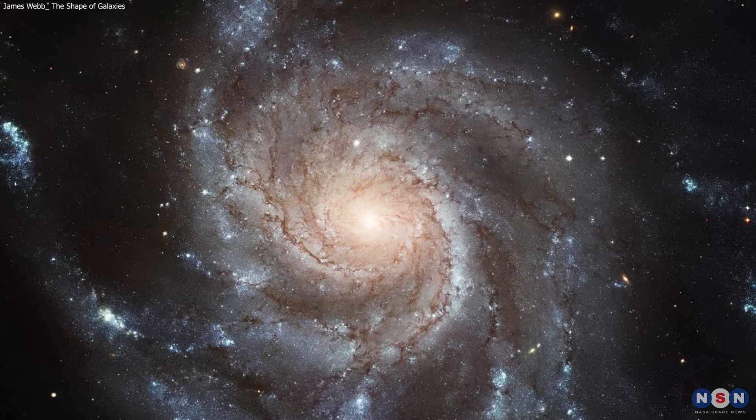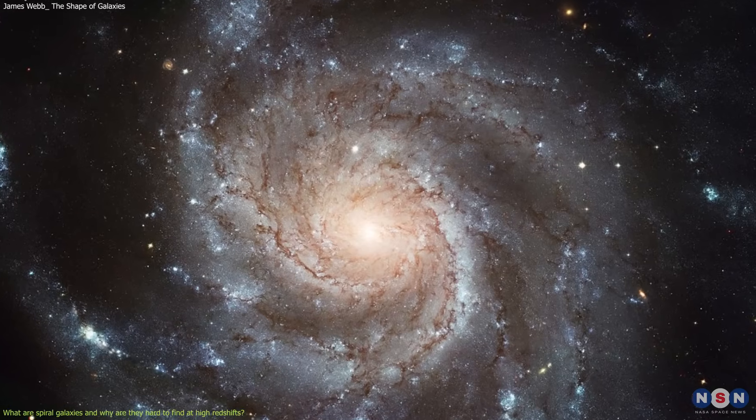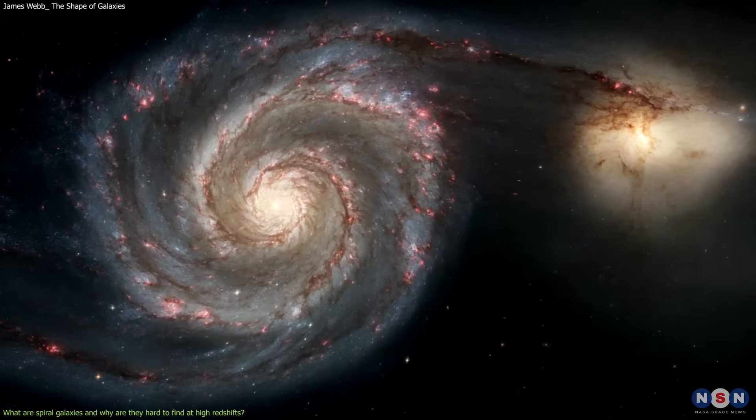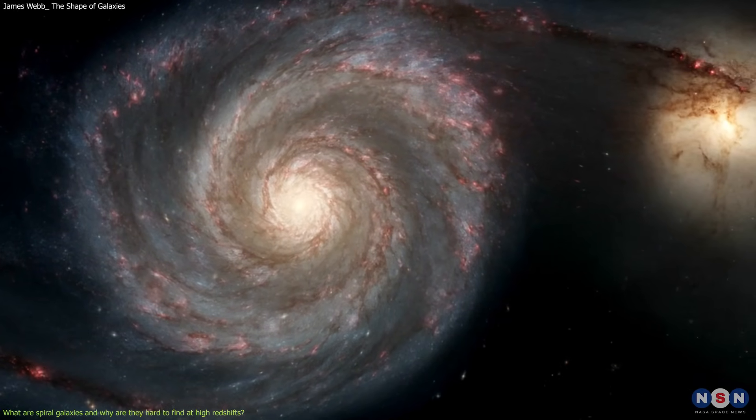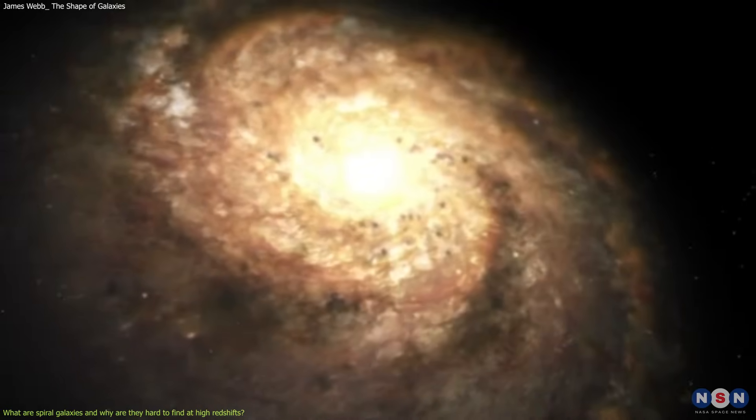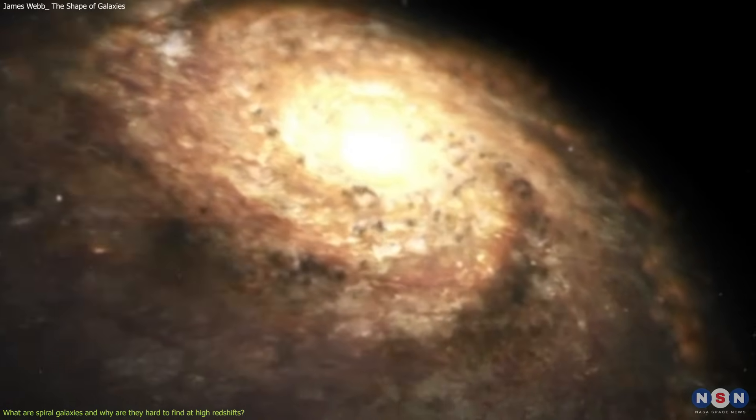Let's start with the basics. What are spiral galaxies, and why are they so interesting? Spiral galaxies are galaxies that have a disc-like shape with spiral arms that extend from the center. The center is usually a bright bulge that contains older stars.